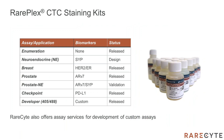Here is a list of the staining kits available now or coming soon from RareCite. In this brief presentation, I have shared some data from all of these assays, and detailed assay validation reports are available from RareCite upon request. In addition to the indication-specific assays, we also provide developer kits that allow you to add up to two additional biomarkers to a RarePlex CTC assay. Note, these kits use the same developer technology deployed by our scientists to develop our biomarker assays. RareCite also offers assay services for the development of custom assays.